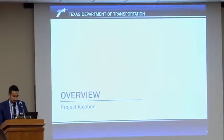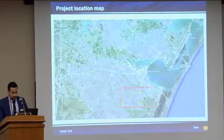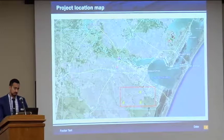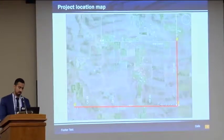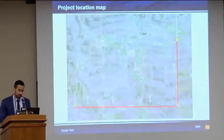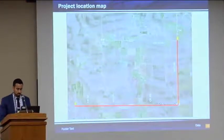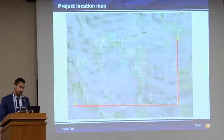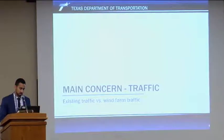Overview: our project location is south of Corpus Christi. The two roads that were impacted by the wind farm development were State Highway 26 and FM 70, also known as Chapman Ranch.